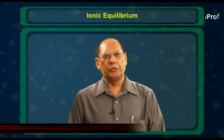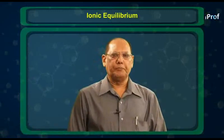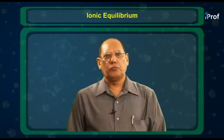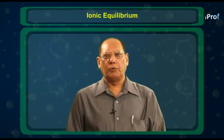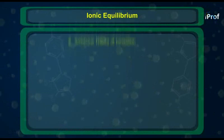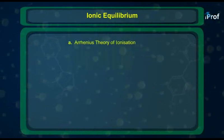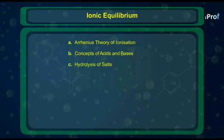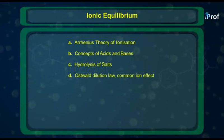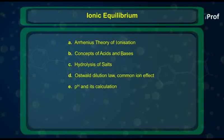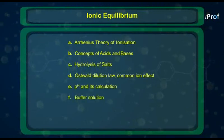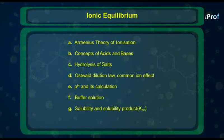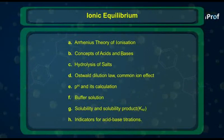Today, we shall start with the next chapter of physical chemistry, known as ionic equilibrium. In this chapter, we shall be studying in detail the following points: Arrhenius theory of ionization, concepts of acids and bases, hydrolysis of salts, Oswald dilution law, common ion effect, pH and its calculations, buffer solutions, solubility and solubility product (KSP), and finally, indicators for acid-base titrations.